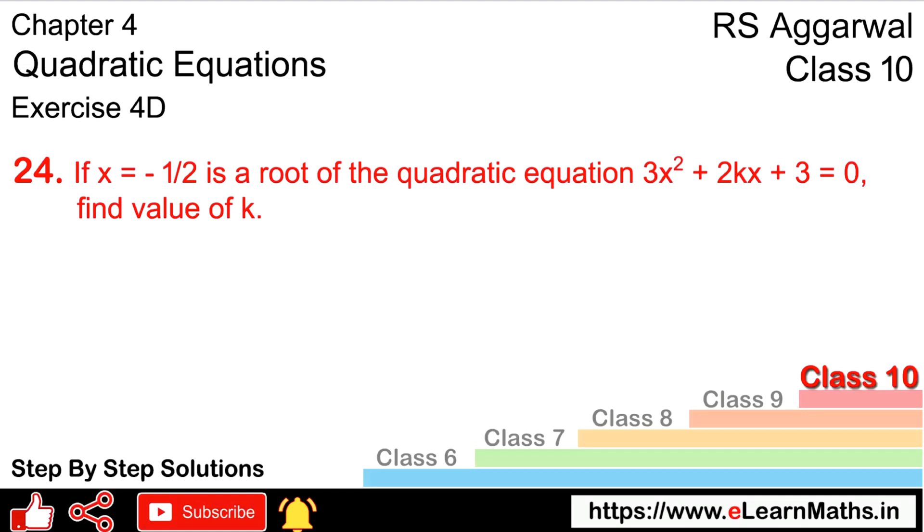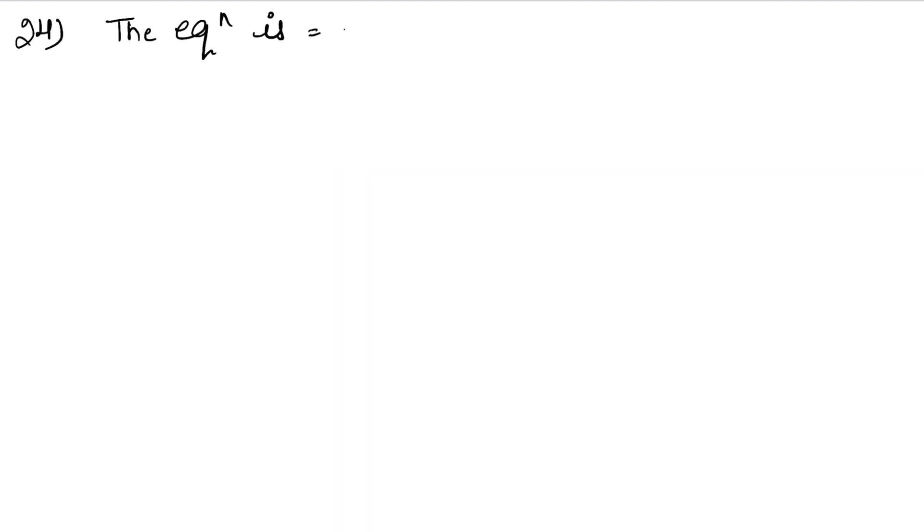We can draw the equation. The equation is 3x² + 2kx + 3 = 0. We have given this equation and said that x equals to minus 1 upon 2. This equation is the root.